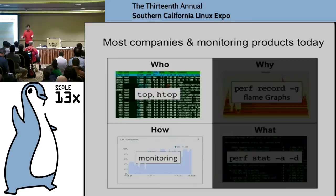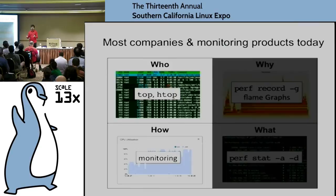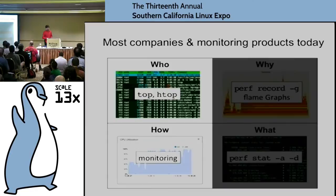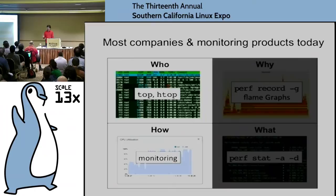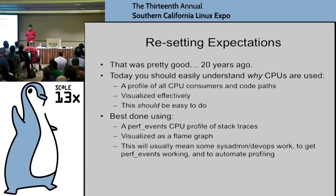A lot of the time people treat applications as a black box, adding print statements to logs or making assumptions about which code paths are hot. Profiling will show you what's really happening and why you're consuming CPU cycles. Doing just top-level metrics — who's eating CPU and showing that over time — was pretty good in the 90s. But today we should really have access to all the information to complete workload characterization and understand all the reasons CPUs are being consumed.